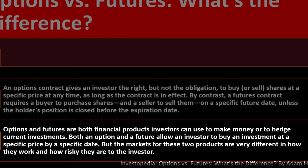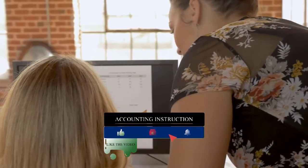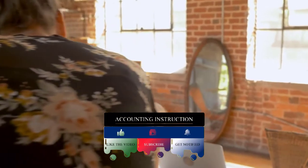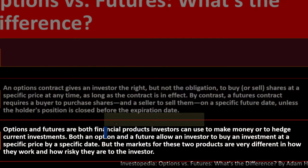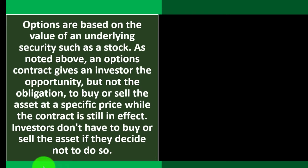Options and futures are both financial products investors can use to make money or to hedge current investments. You might use these techniques as a strategy, especially in particular industries, to reduce risk, or use them speculatively to try to make money on the market. Both allow an investor to buy an investment at a specified price by a specific date, but the markets for these two products are very different in how they work and how risky they are.